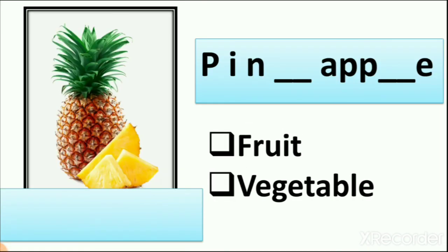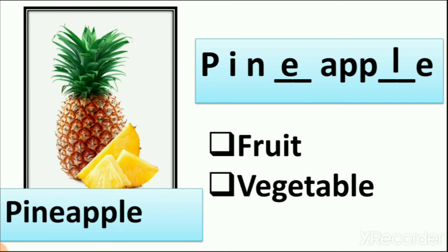Next is pineapple. The spelling of pineapple is P-I-N-E-A-P-P-L-E. In this spelling we have the word apple inside it, and apple is a fruit we eat. So pineapple is also a fruit we eat. We circle the fruit.